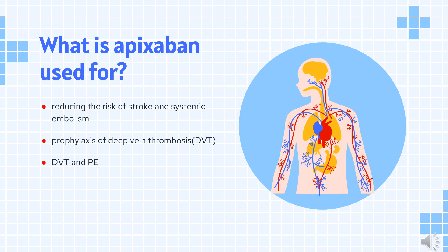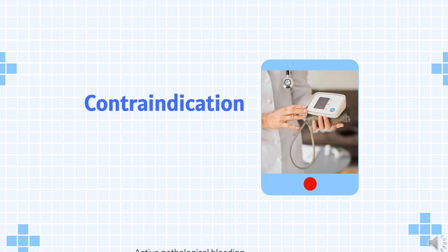Apixaban is indicated for reducing the risk of stroke and systemic embolism in patients who have non-valvular atrial fibrillation, prophylaxis of deep vein thrombosis (DVT) leading to pulmonary embolism (PE) in patients after a hip or knee replacement surgery, and treatment of DVT and PE to reduce the risk of recurrence.